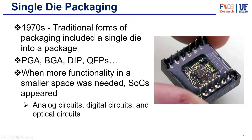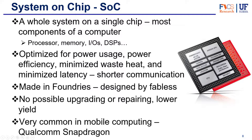Those packages had one single die and usually one function. However, when more functionality was required for a smaller space, a new type of chip came up called SOC, or System on Chip. These chips are still single die, but within a single die they manage to fit different functions — analog circuits, digital circuits, optical circuits. This system on chip for the first time manages to get a whole system into a single chip. It can have most components of a computer: the processor, memory, inputs, outputs, DSPs. They were optimized for power usage, power efficiency, minimized waste heat, and minimized latency because the design is very compact.